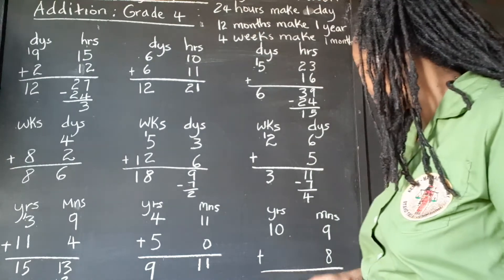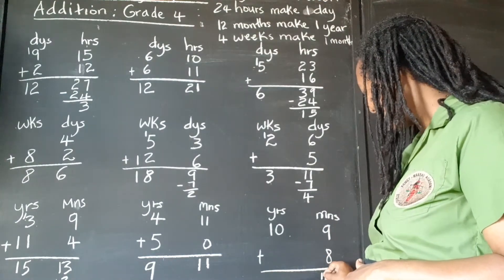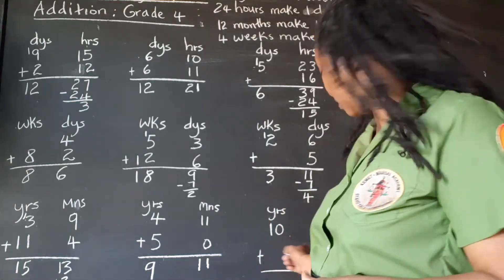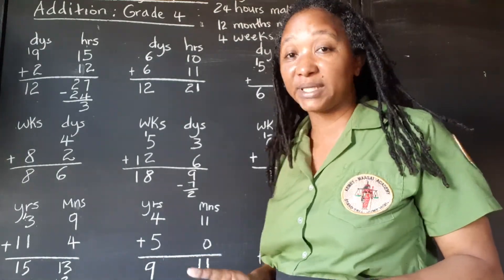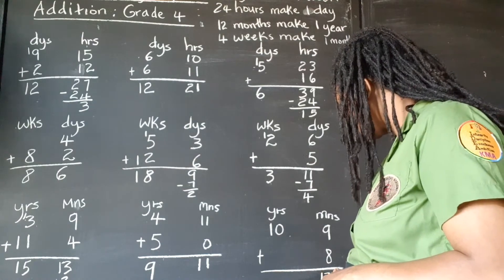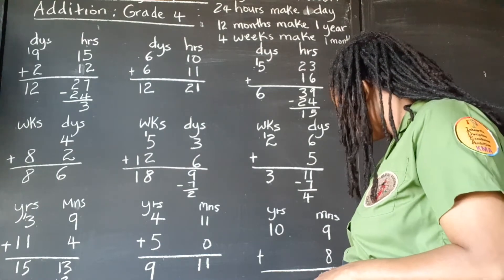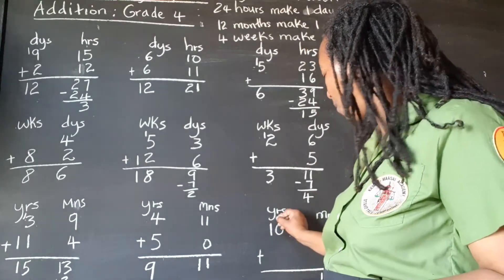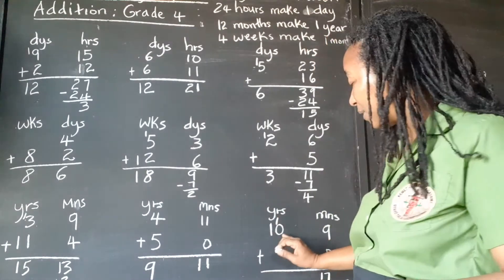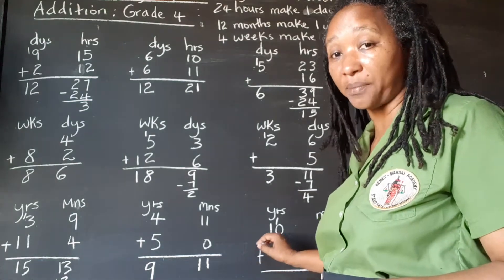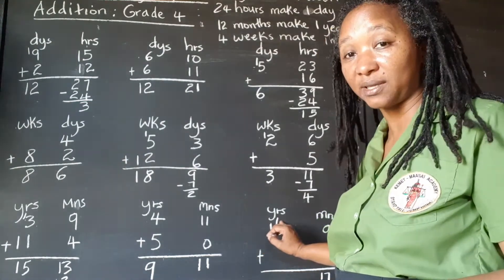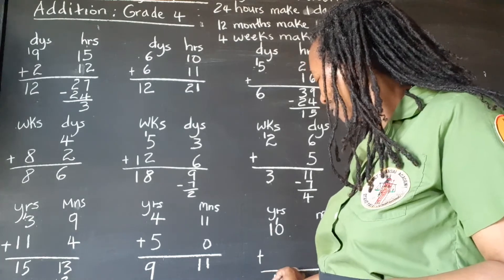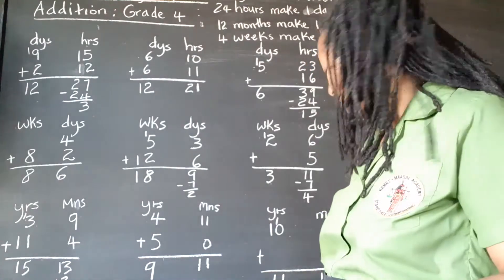Now 9 plus 8 is 17. We know that's a no-no — we can't leave 17 months. We must take out a group of 12, and we're left with 5. This group of 12 we're going to transfer as 1 year. Remember, we still follow our place value system here, so we bring it to this place. 1 plus 0 is 1, and that's 1. So that's 11 years and 5 months.